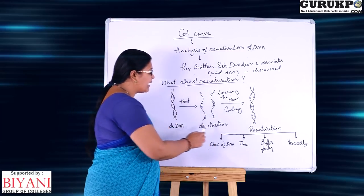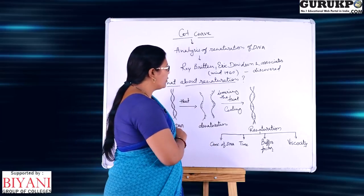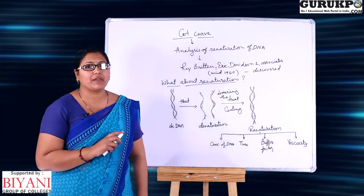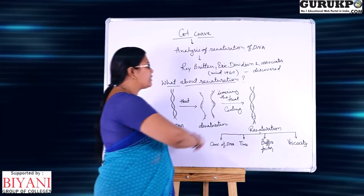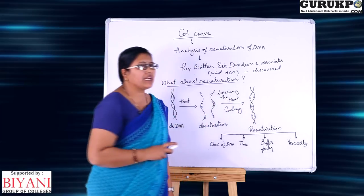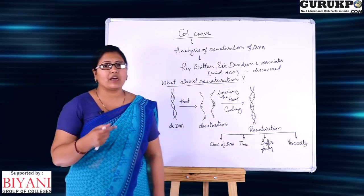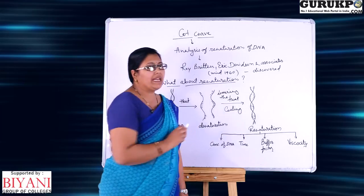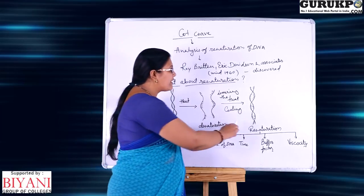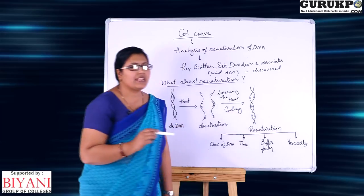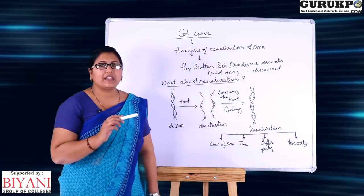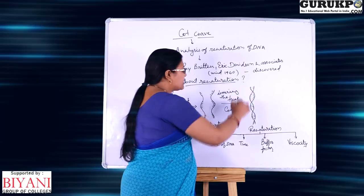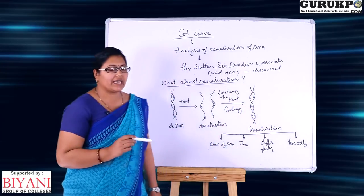The separation of the double strand, which is held together by hydrogen bonds, is called denaturation. When we then reduce the temperature or cool the sample, the DNA that was denatured reanneals — the single-stranded DNA converts back to double-stranded DNA. We call this process renaturation.